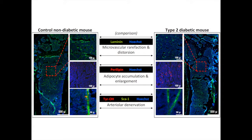This picture shows some of the alterations observed in the bone marrow of OB-OB mice, a model of type 2 diabetes, as compared to control mice. You can see rare affection and abnormal morphology of the microvasculature, as well as the reduction of arteriolar innervation by sympathetic nerve terminals and excess fat deposition. All these changes can affect bone marrow function.